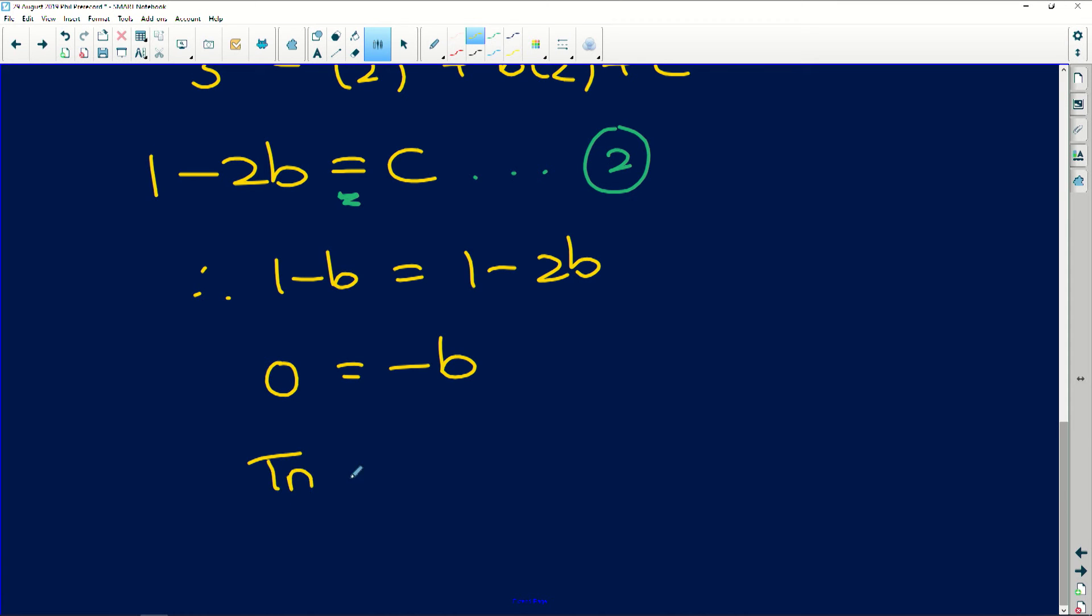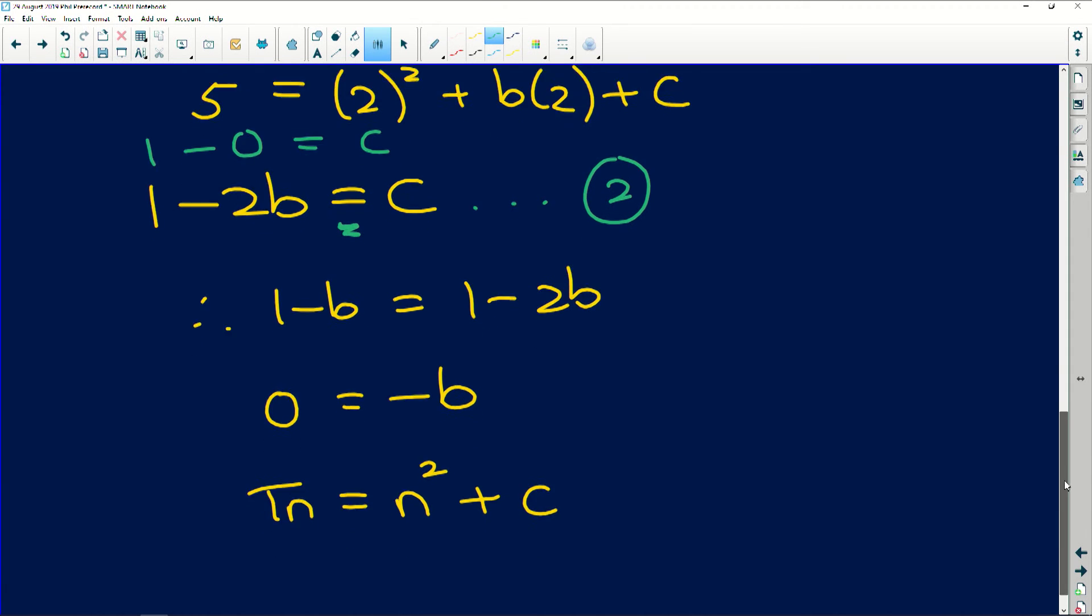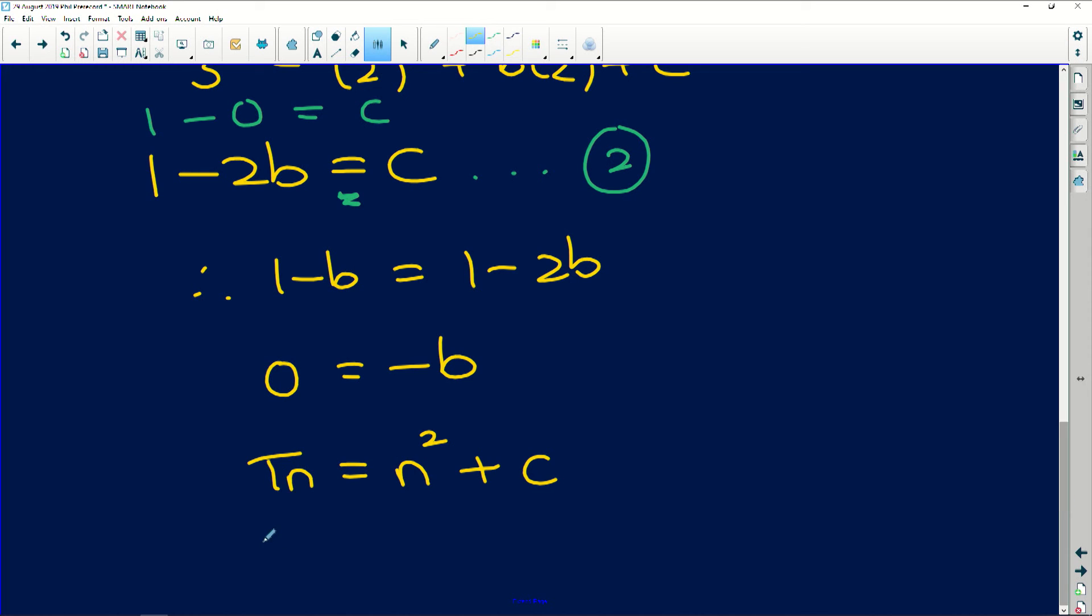So now if we go back to our general formula, we found that a was 1, so it's just n². b is 0, so there's no coefficient of just n. So it's n² + c. How do we find c? We can simply substitute b equals 0 into one of these equations. So I'm going to put it into this equation. It's going to say 1 - 0 = c, which means that c is equal to 1. So we get tn = n² + 1.